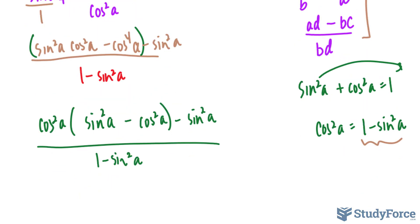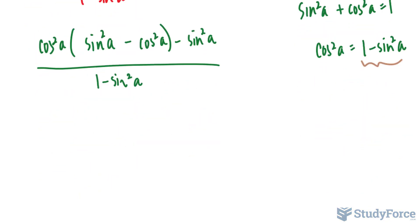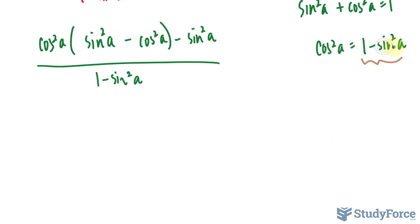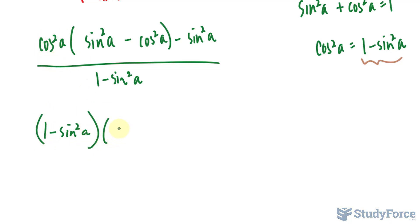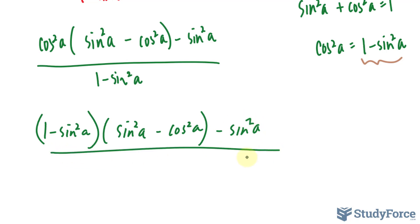The reason that's a good thing is because, using the same identity, I'll replace this cosine squared A with 1 minus sine squared A. So I have 1 minus sine squared A in place of that, giving sine squared A minus cosine squared A, minus sine squared A. The rest stays the way it is.